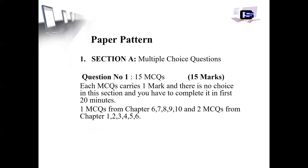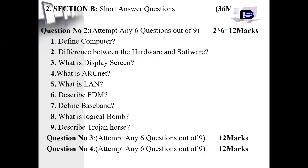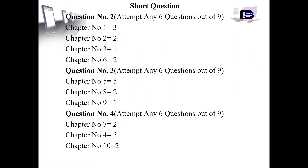To summarize what we have seen so far: In Section A, there are 15 MCQs worth 15 marks. In Section B, we have 3 questions — Questions 2, 3, and 4 — each with 9 questions total and 6 attempts. The short questions follow the same chapter range as I have reviewed from the board papers.